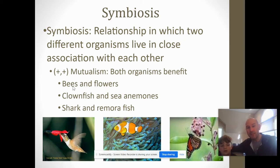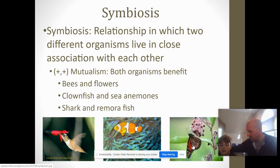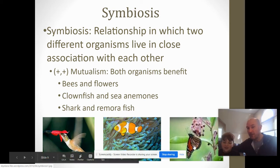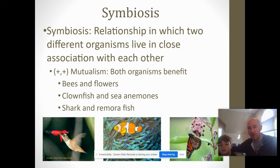Another example is bees and flowers — or butterflies and flowers. Butterflies and bees are pollinators. The bees and insects like butterflies get nectar from flowers — that's their food source — and in return they get covered in pollen and spread that pollen around to increase variation. Variation is a big thing.